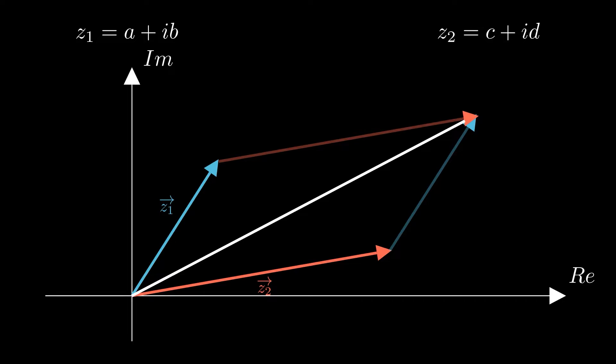And if I construct the long diagonal from the origin there, then I can see from my vector addition head to tail diagram here that that diagonal represents the vector z1 plus z2.